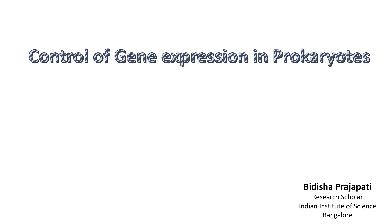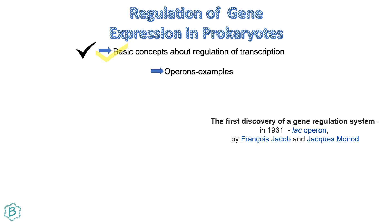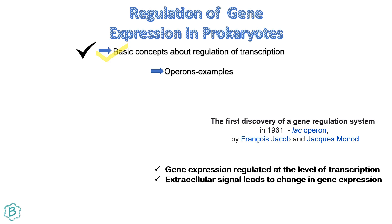Hello everyone, this is Devisha and today's topic is control of gene expression in prokaryotes. We are going to cover basic concepts about regulation of transcription and operons. The first discovery of a gene regulation system was in 1961 by François Jacob and Jacques Monod for the lac operon.